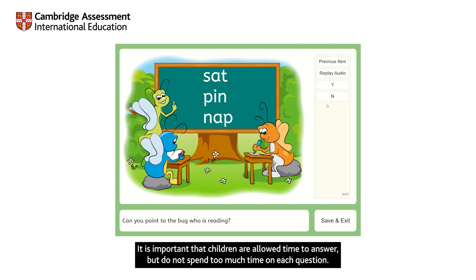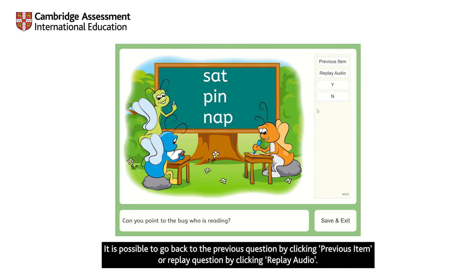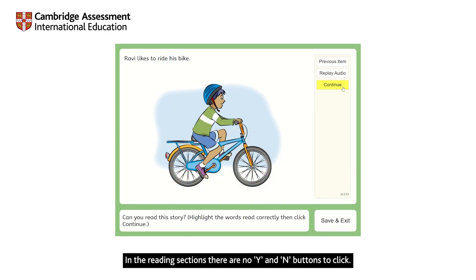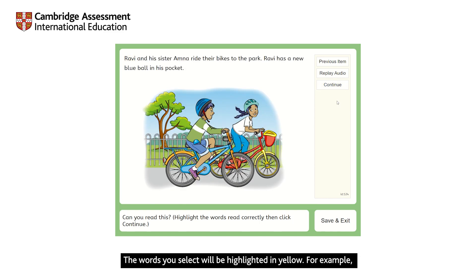It is important that children are allowed time to answer, but do not spend too much time on each question. Move on by clicking N if a child is unable to provide a correct answer in a reasonable length of time, while suggesting that they try the next question. It is possible to go back to the previous question by clicking Previous Item, or replay a question by clicking Replay Audio. In the reading sections, there are no Y and N buttons to click. Instead, select the words the child reads aloud correctly by clicking on each word individually. The words you select will be highlighted in yellow.